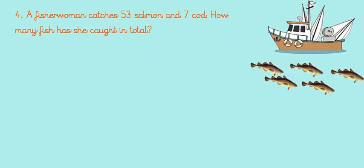The last question for us today. Let's read it nice and loud. A fisherwoman catches 53 salmon, that's a kind of fish, and seven cod, another kind of fish. How many fish has she caught in total? Which clues did you spot to tell us it's an addition question? And, this and that, and total. We're going to add this and that to find the total. Let's write ourselves a number sentence.